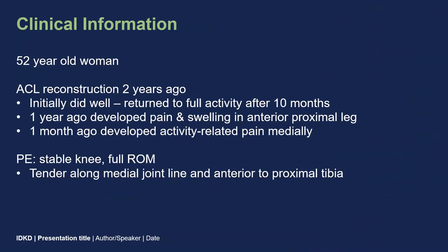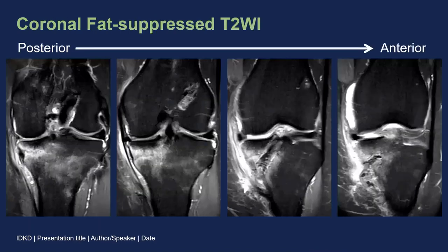This patient is a 52-year-old woman who had an ACL reconstruction two years ago. Initially she did well and returned to full activity after 10 months. One year ago, she developed pain and swelling in the anterior proximal leg, and about one month ago developed activity-related pain medially. On physical exam, her knee is stable with a full range of motion, and she has tenderness along the medial joint line and anterior to the proximal tibia.